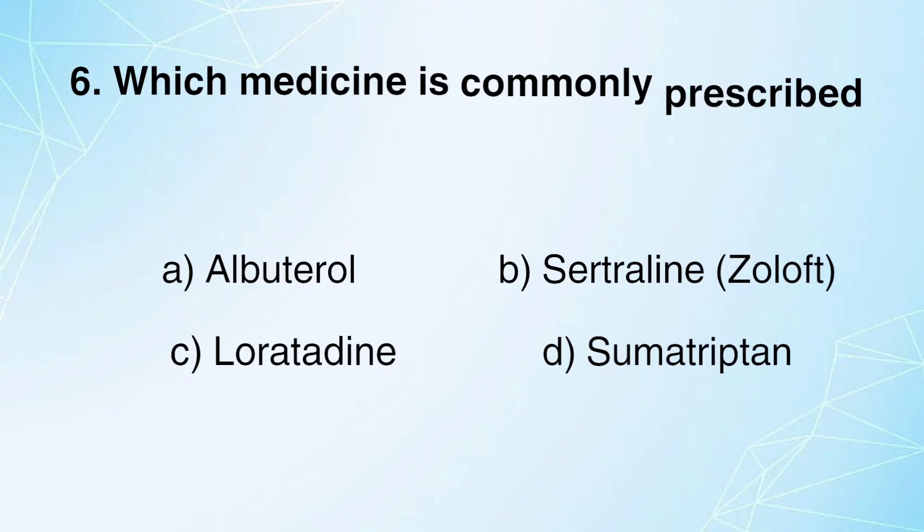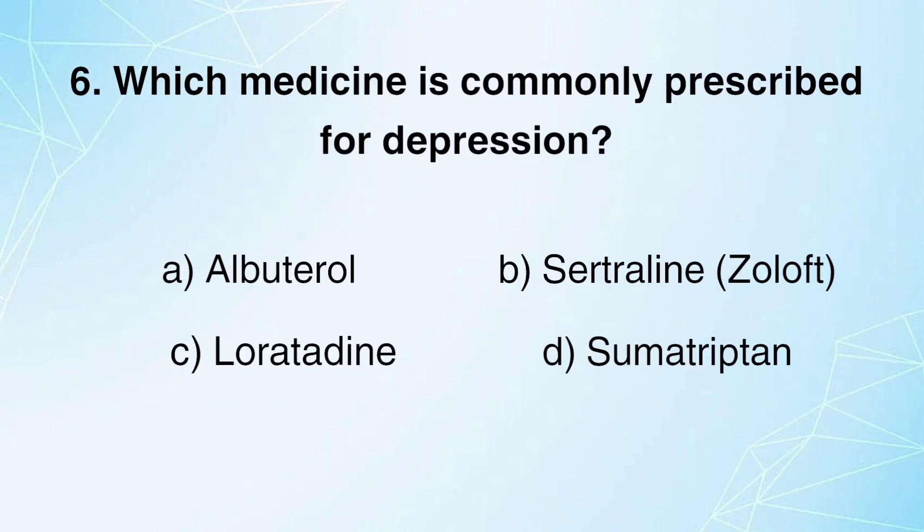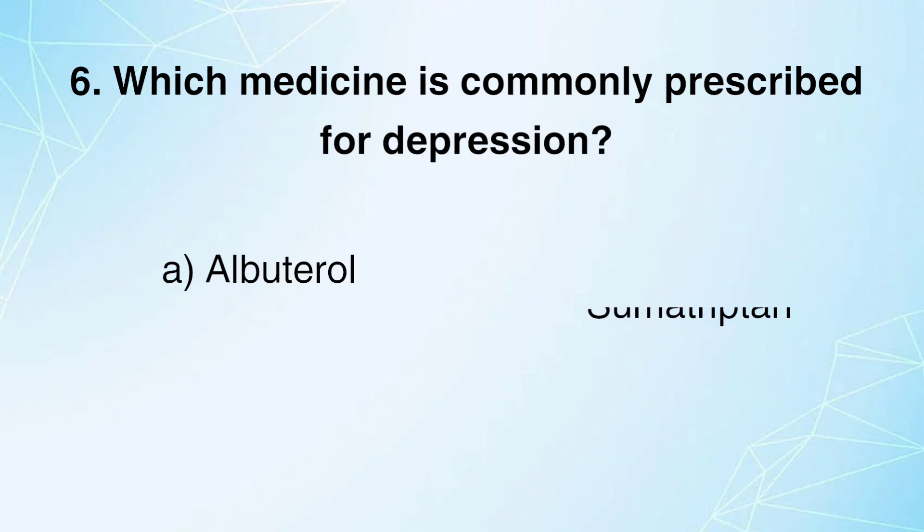Which medicine is commonly prescribed for depression? A. Albuterol. B. Sertraline (Zoloft). C. Loratadine. D. Sumatriptan. Answer: B.